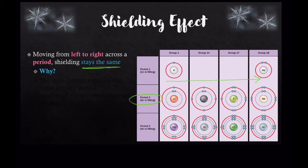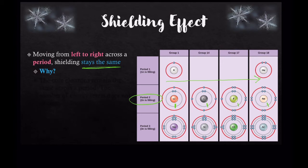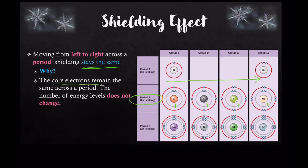If we look at period two and go left to right across the period, you can see that the shield stays the same. Remember, the shield is the core electrons. Lithium, the first element in period two, only has one energy level with core electrons on it. If we jump over to carbon in group 14, carbon also has just one inner energy level. So does fluorine and so does neon. These elements are all in the same period, meaning they have a total of two energy levels, and the first energy level — marked here — represents the core electrons.